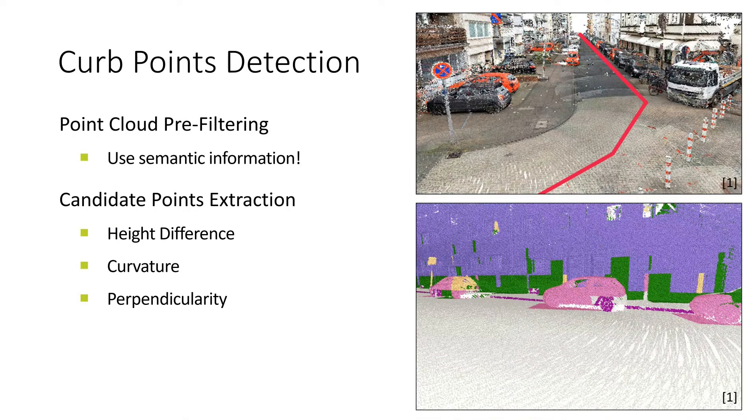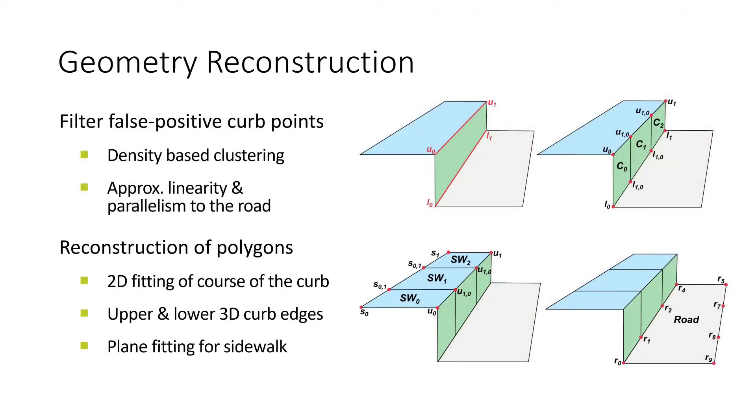Semantic information allows for smart filtering and with OpenStreetMap data and geometric properties we extract curb points. Curb-like obstacles produce false positives, which we filter in the next step, finally leading us to the curb geometry through a series of plane fitting operations.